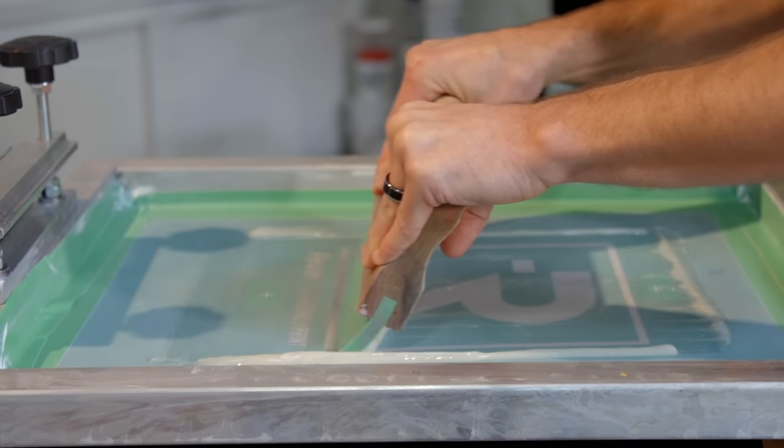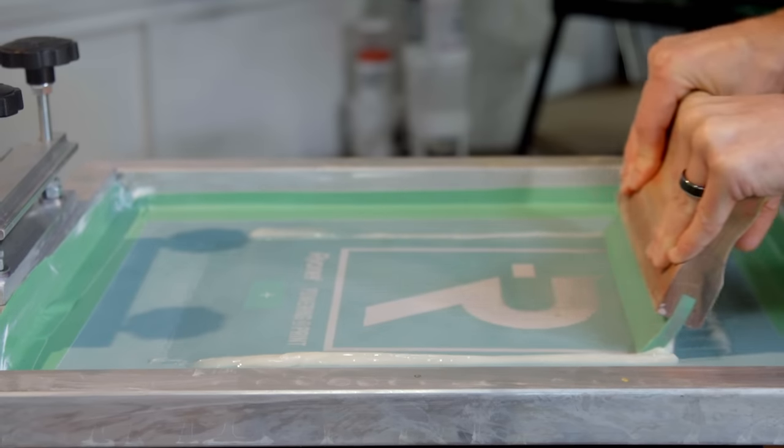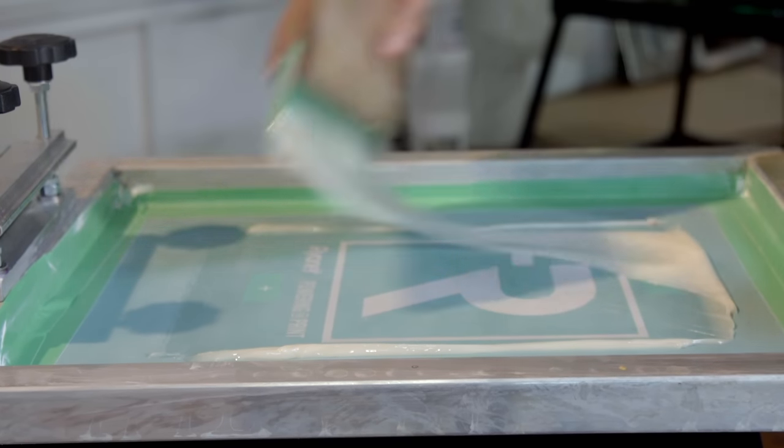Once printed, you can do three things prior to foiling. One, you can cure it through a conveyor tunnel, second, you can flash it, and third, you could actually transfer it prior to curing it all.